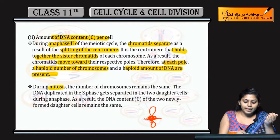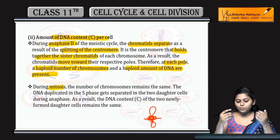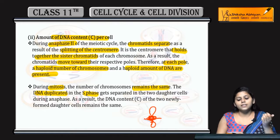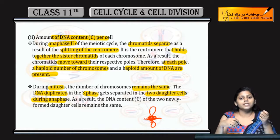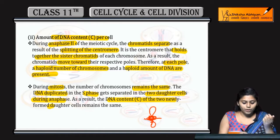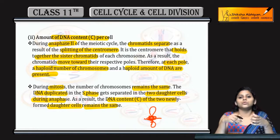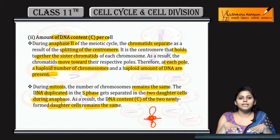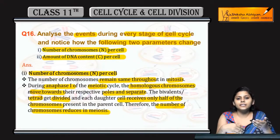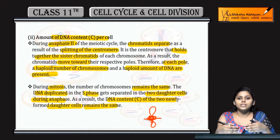Mitosis ke case mein number of chromosomes jo present hote hain, that remains the same — humne abhi dekha. And DNA duplicate hota hai during S phase, aur gets separated into two daughter cells during anaphase, jiske wajah se DNA content of two newly formed daughter cells remain the same. To daughter ka DNA content jo hai, woh same rehta hai in case of mitosis. So yeh tha different DNA content kitna change hota hai aur number of chromosomes kitne change hote hain during meiosis and mitosis.